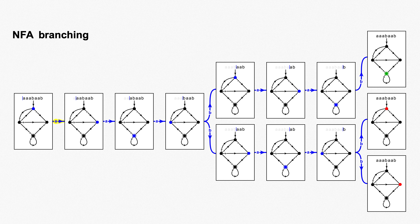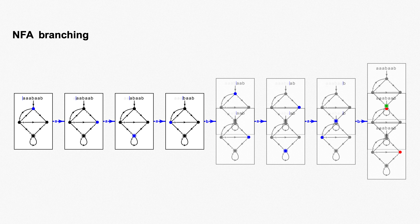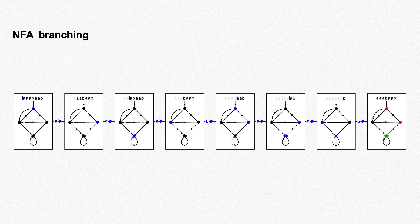From first column to second, all branches transition on that first A, all the way down to the last step where all branches transition on a B. The only difference between the configurations of the different branches at each step is which state of the NFA is occupied. Thus we can record all of this much more concisely if we merge our diagrams in each column into a single diagram of the NFA, by allowing ourselves to occupy multiple states at once, one for each branch. We're still talking about the same notion of branching, just representing all of our branches at once on a single diagram.